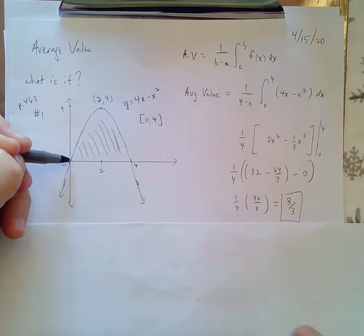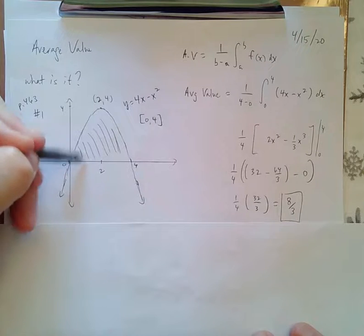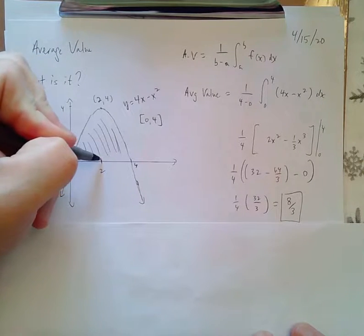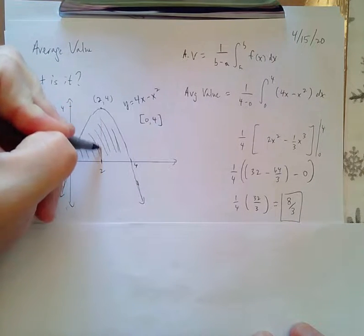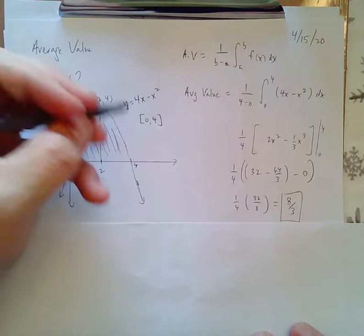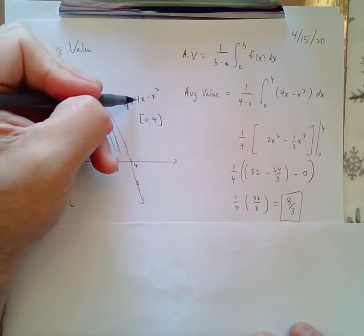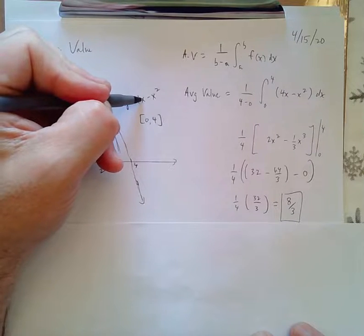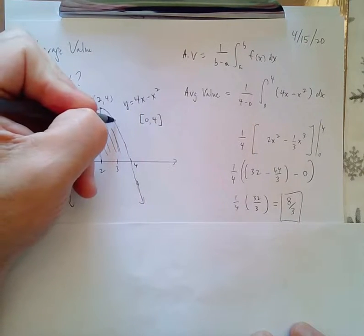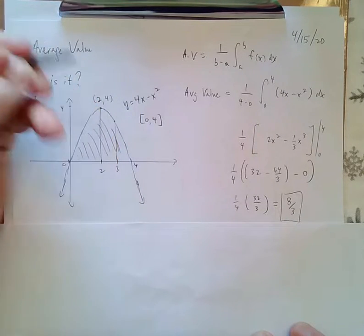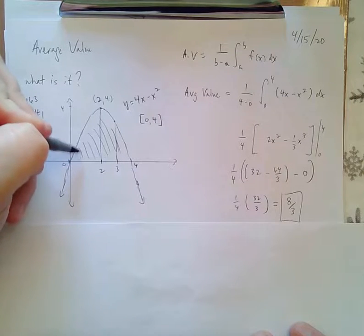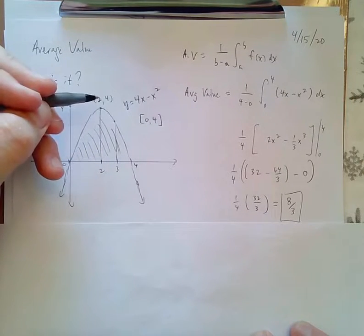What's happening here is there's a bunch of heights. The height at 2 is 4. That's the height of that rectangle. At 3, 4 times 3 is 12, 12 minus 9 is 3. That's the height. So you see all of the heights in here, there's an infinite amount of heights. That's the average value.